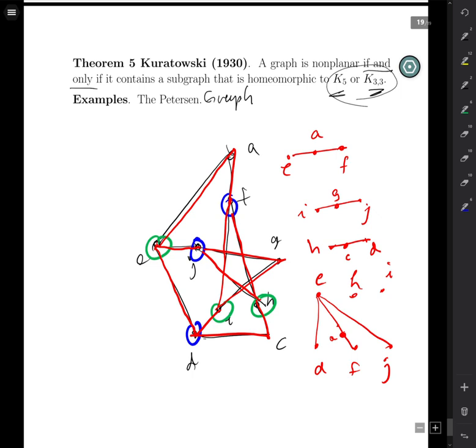Notice none of the greens have a path to the other greens, none of the blues have a path to the other blues, so this subgraph is homeomorphic to K33. So K33 is non-planar.